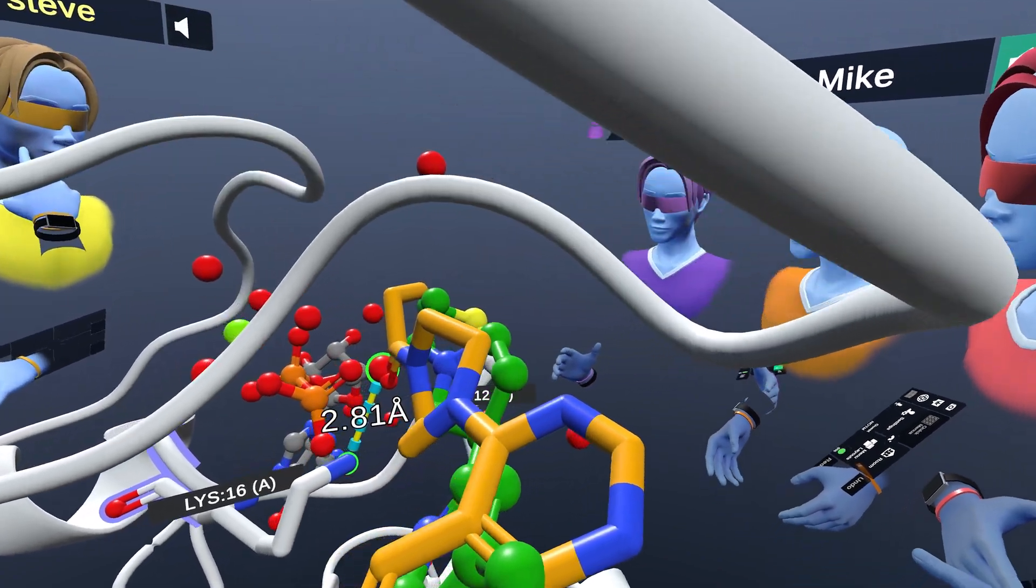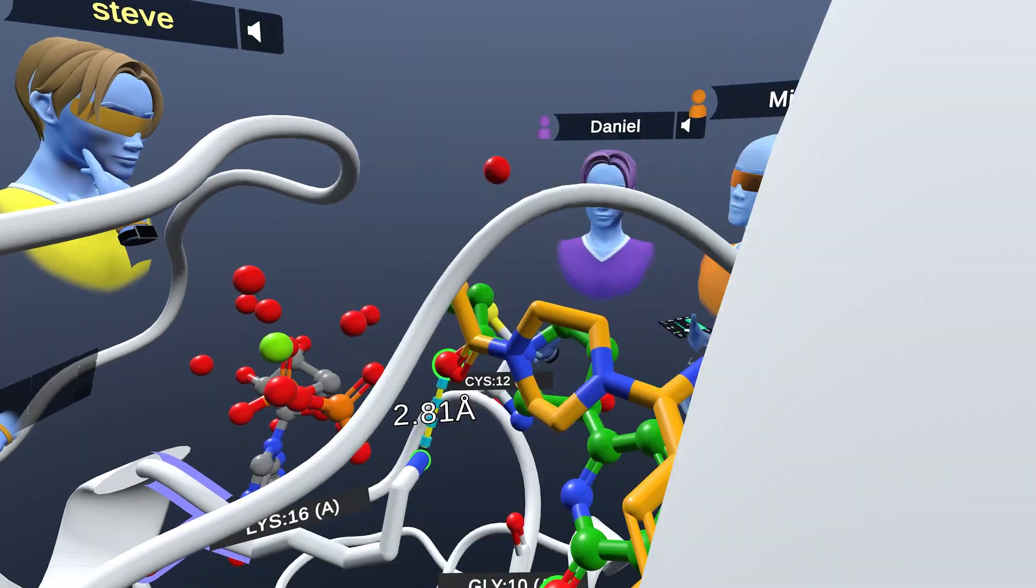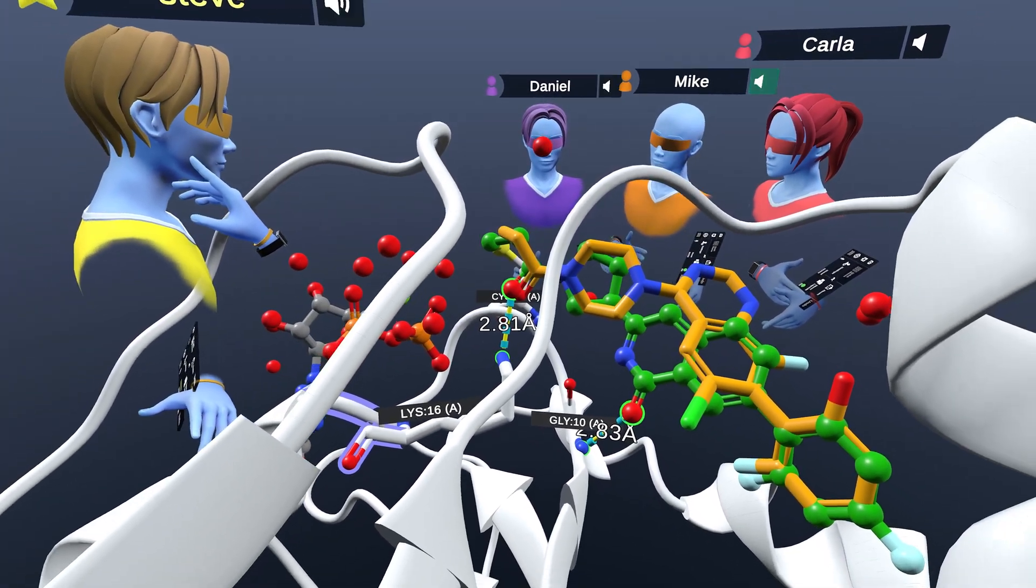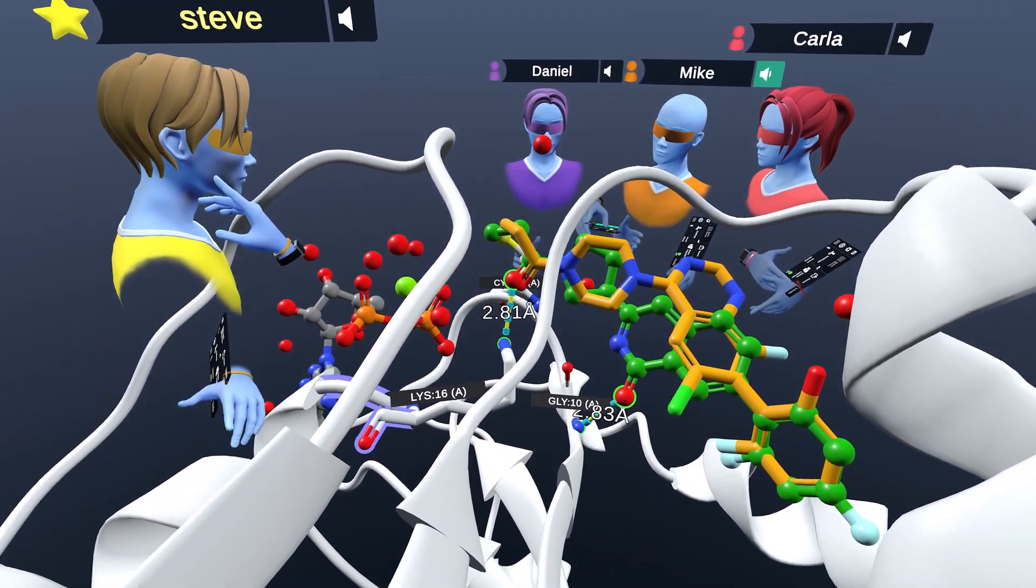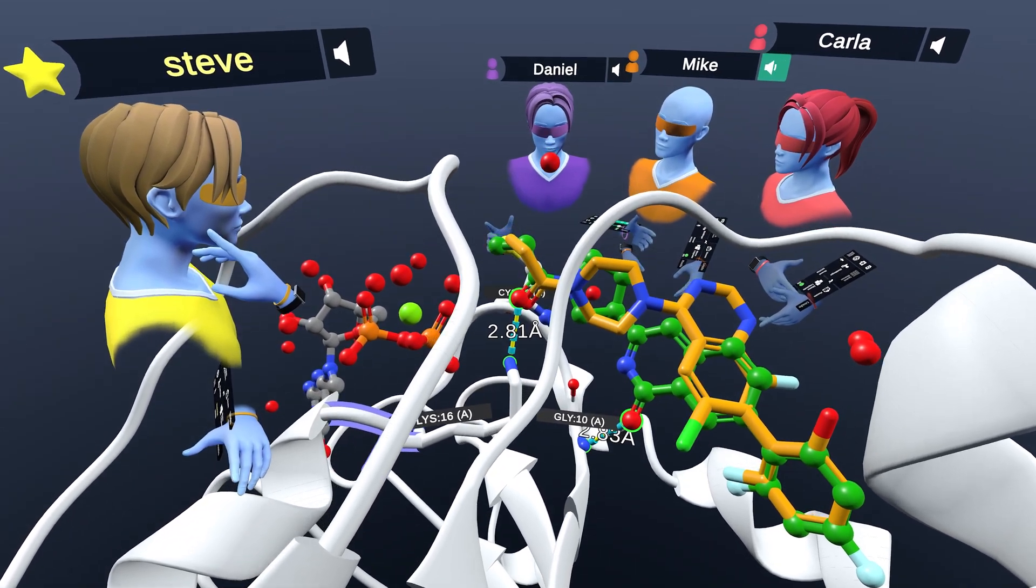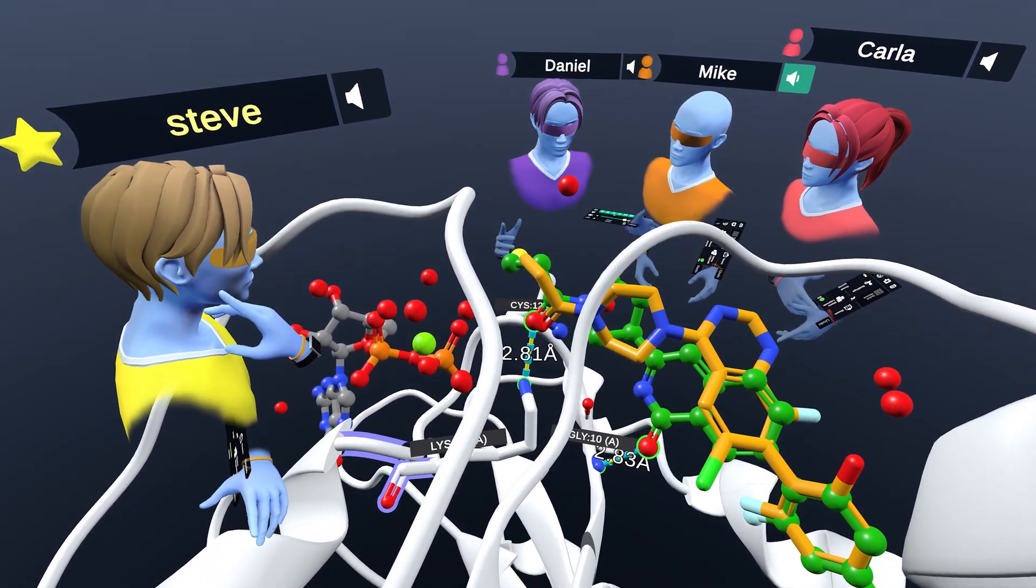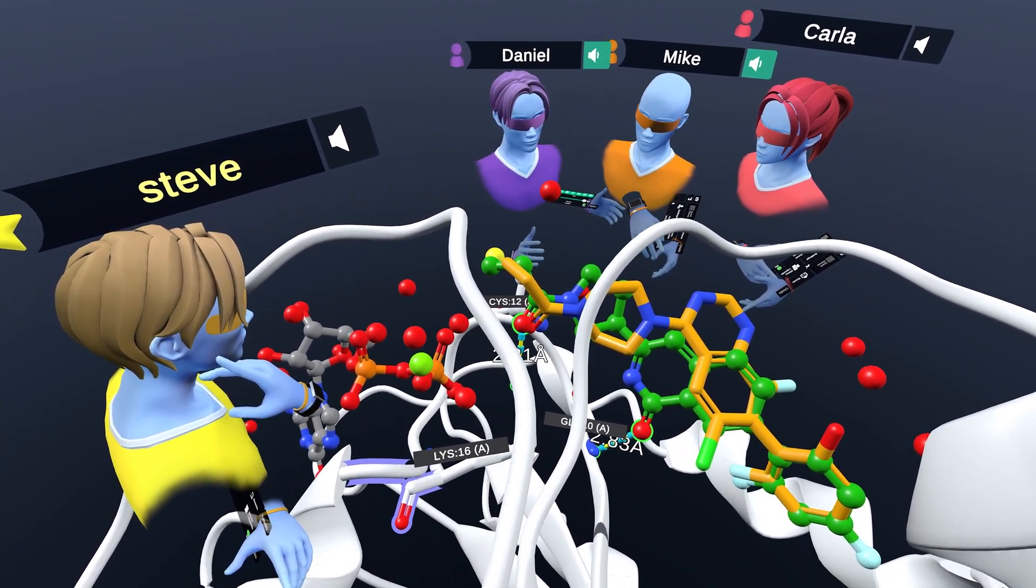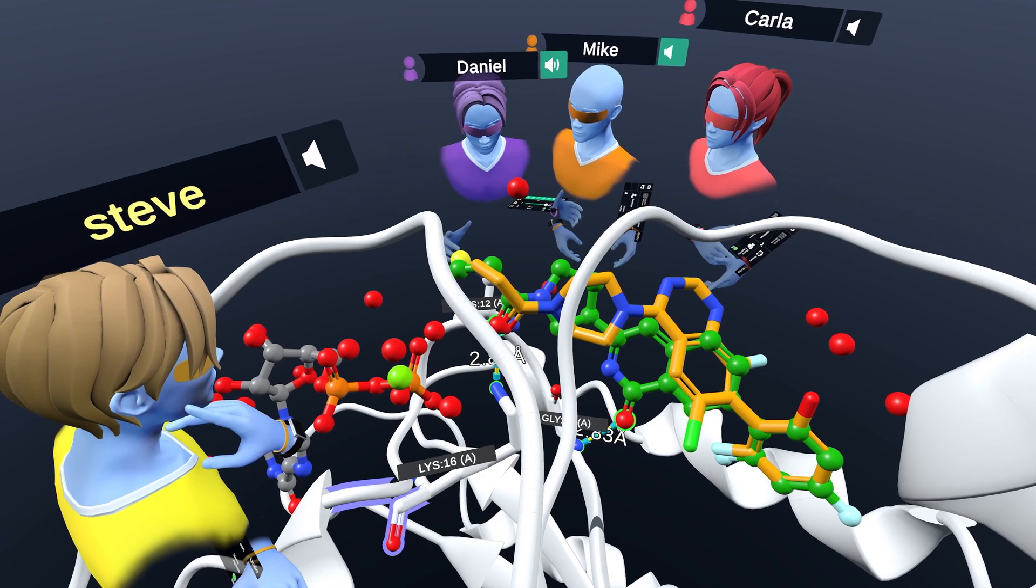Yeah, this KRAS G12C is on almost all the time and signals and signals and drives the cancer. But by binding here, we lock it into an inactive conformation and it can't keep going back to the active conformation. So it's really exciting to have an inhibitor here in the switch 2 binding pocket.